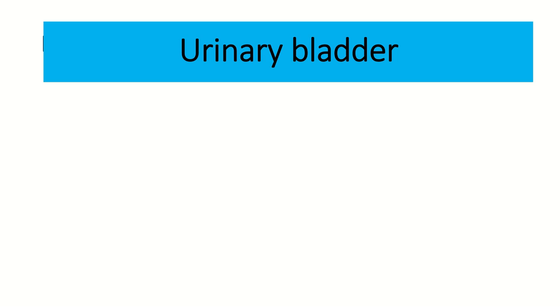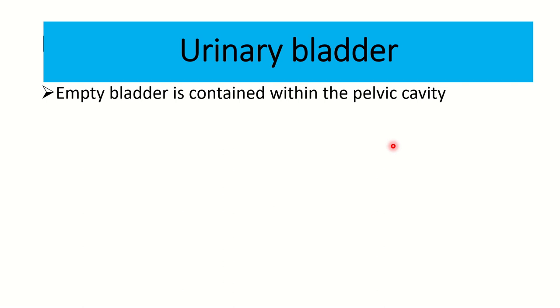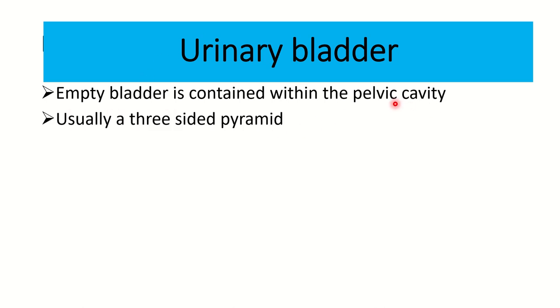Welcome to another lecture video on the urinary bladder. The empty urinary bladder is contained within the pelvic cavity. The anterior abdominal wall is divided into the abdominal and pelvic parts, so the empty bladder is located within the pelvic cavity.